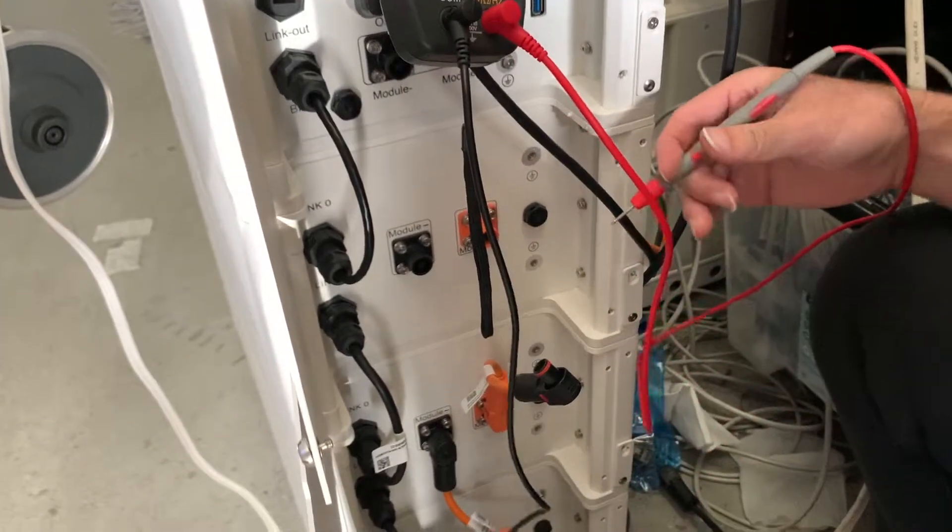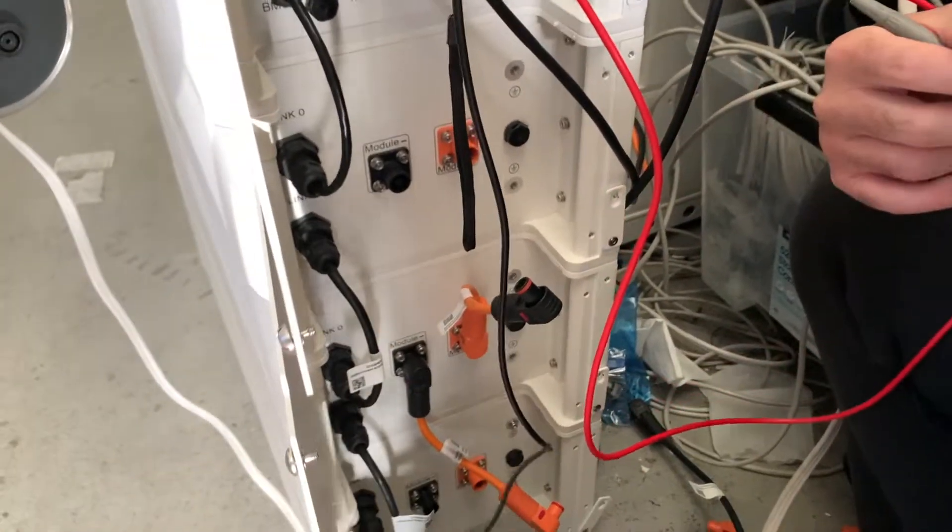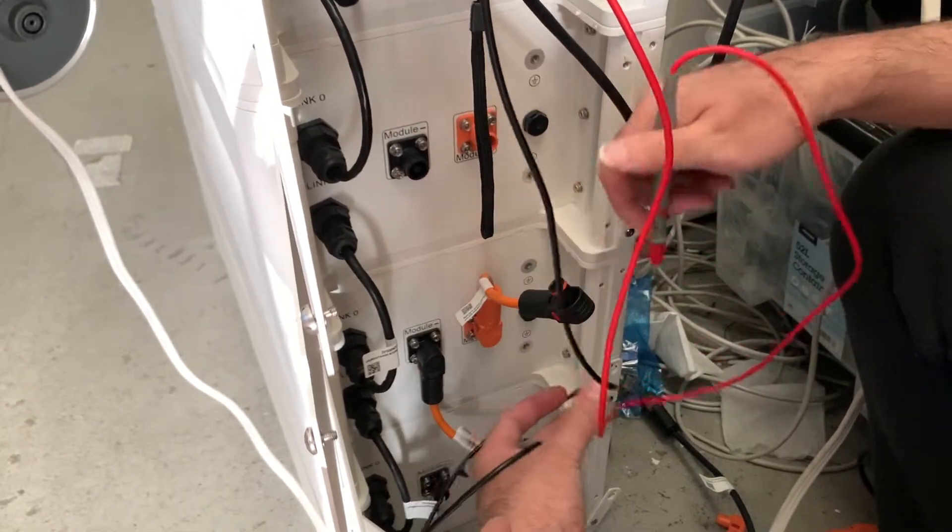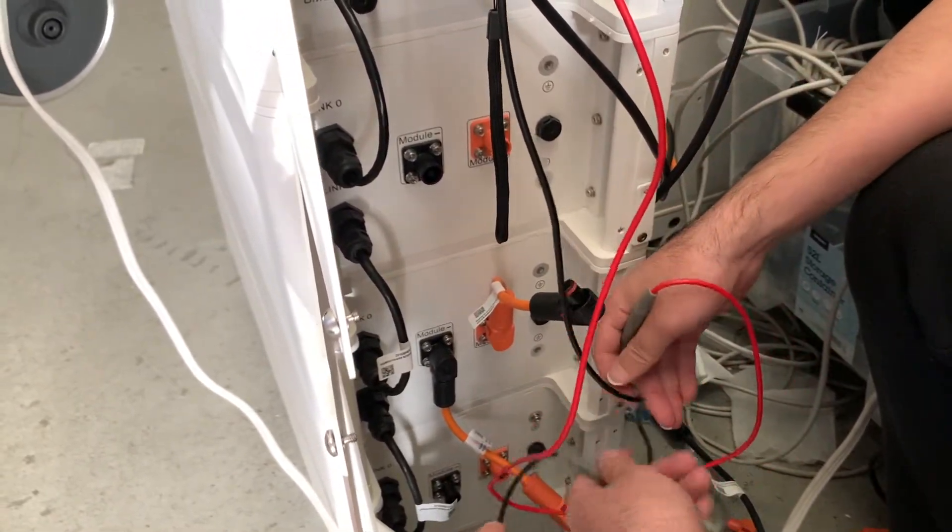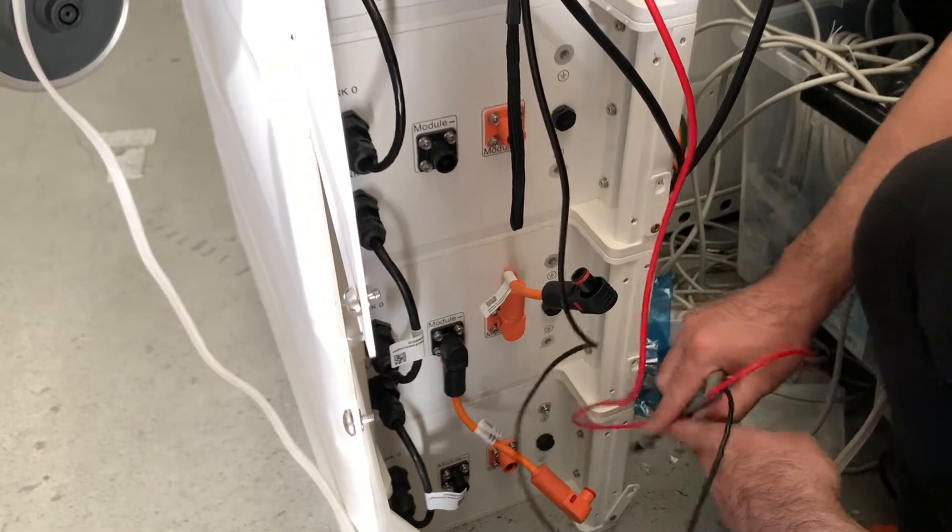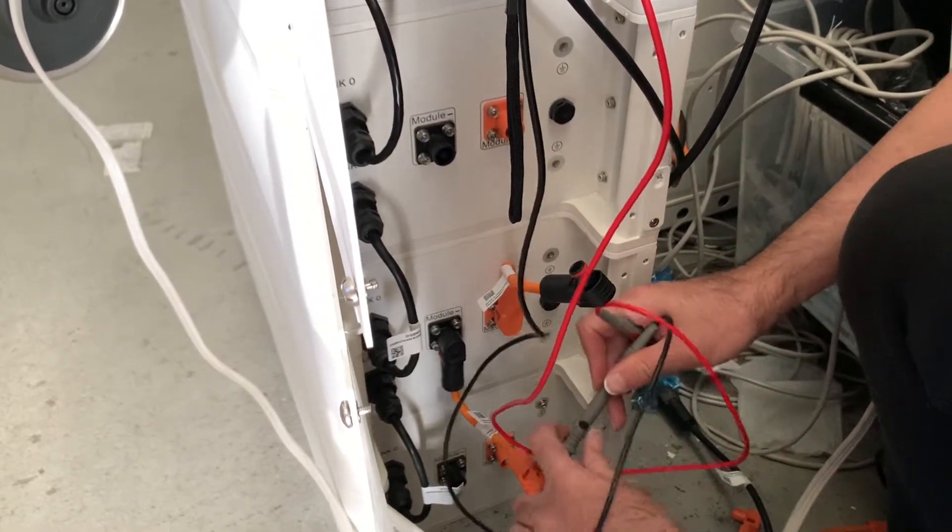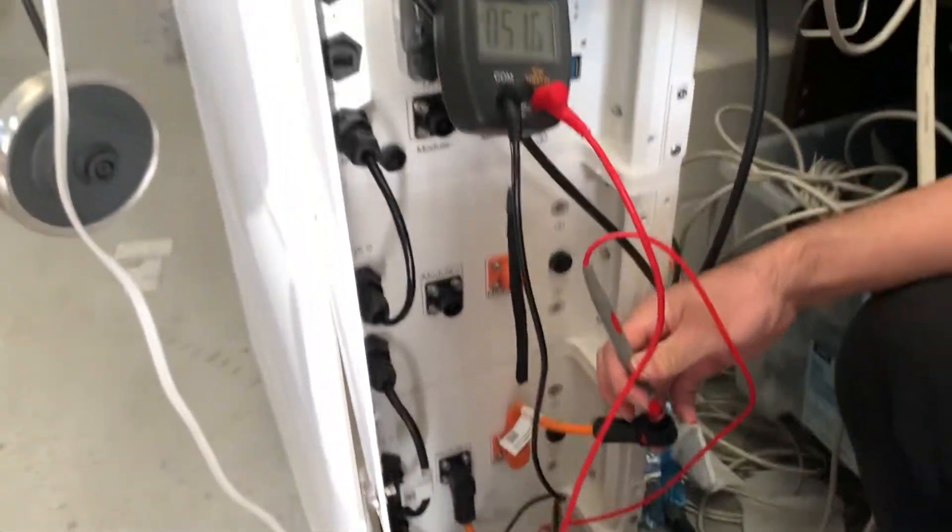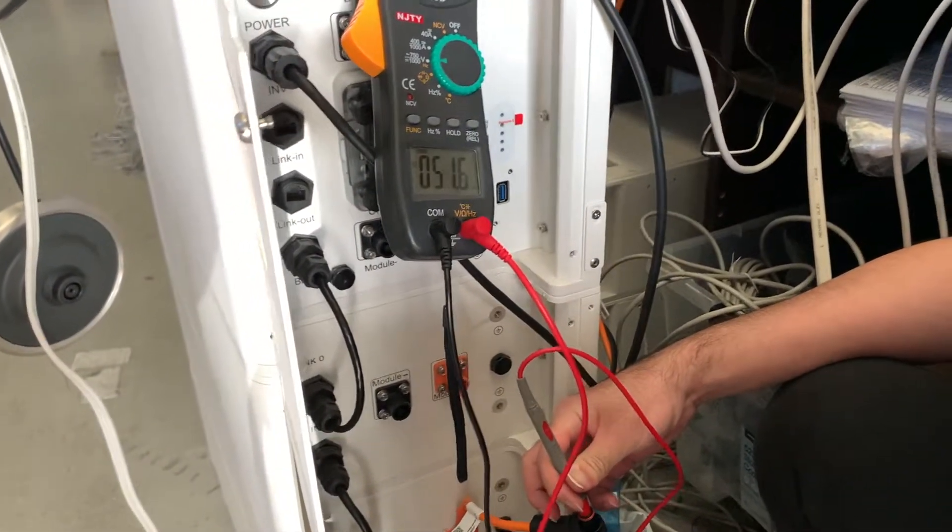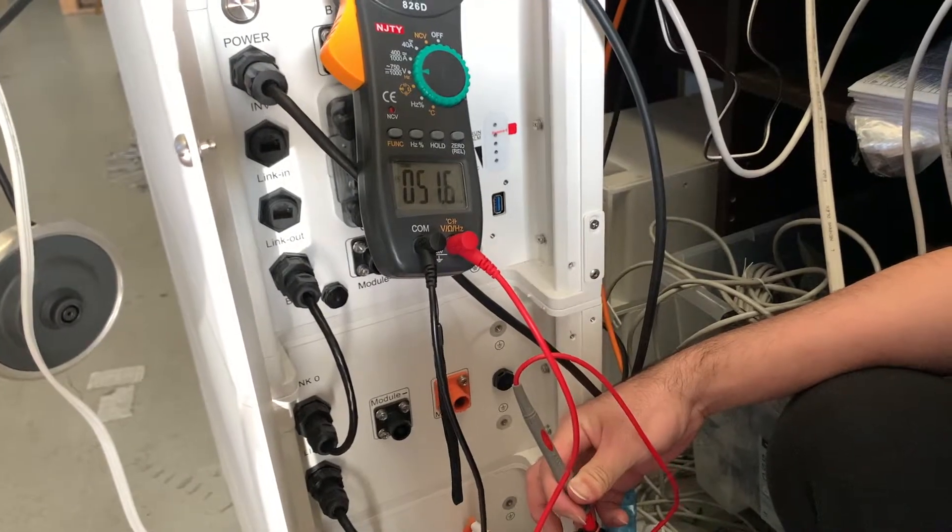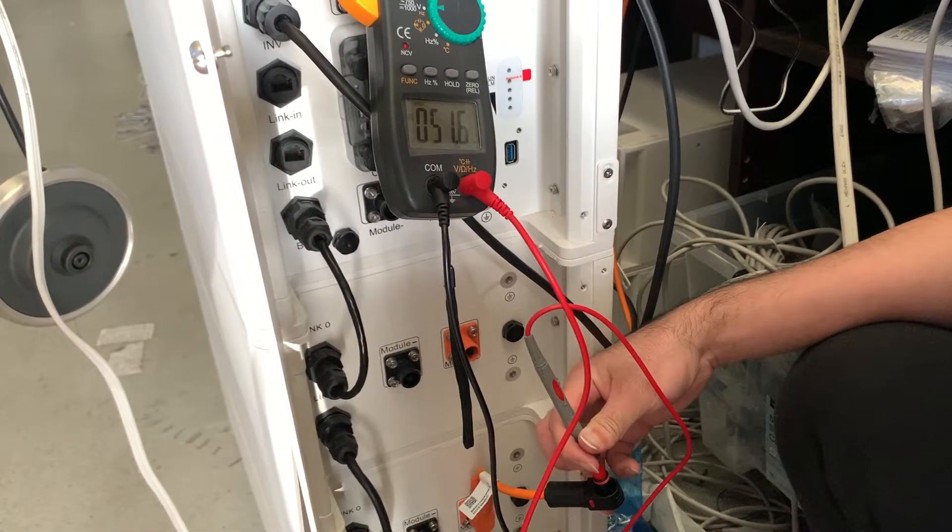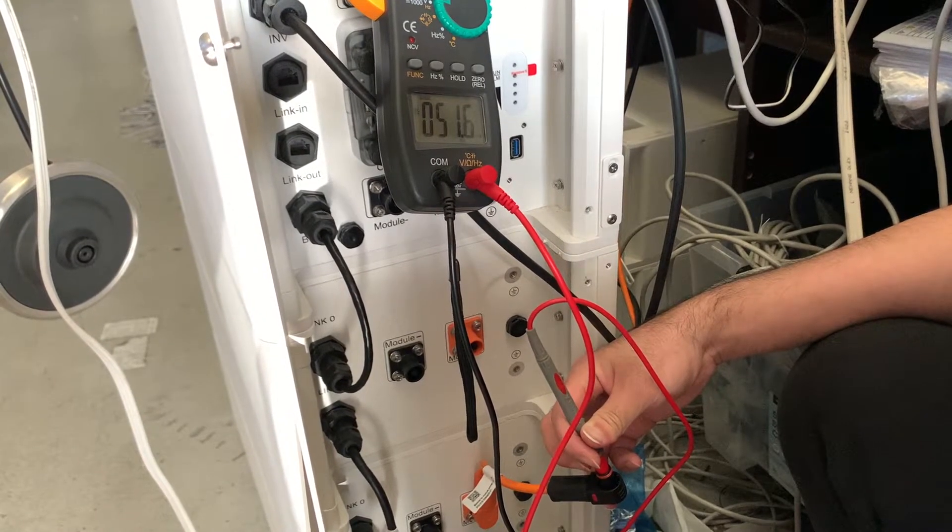We recommend you use the connection cable, the positive and negative connection cable. Because they have a metal insert, we can measure the voltage directly from the cable. So positive and negative. We can get a stable value, which is around 51.6. And the normal range for the ARC battery is around 50 to 52.